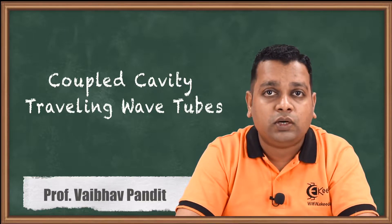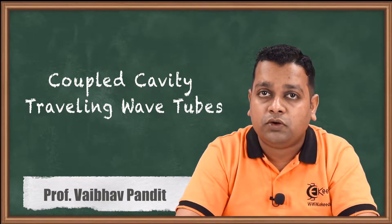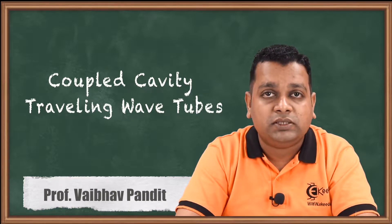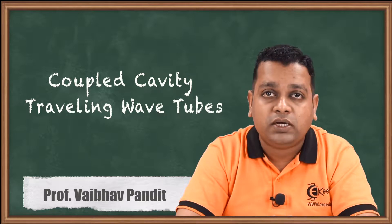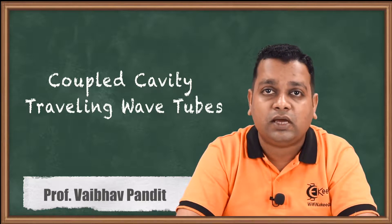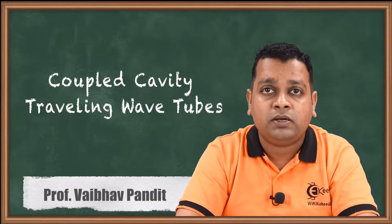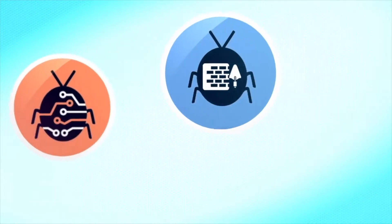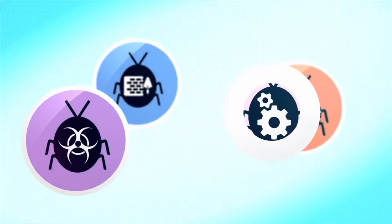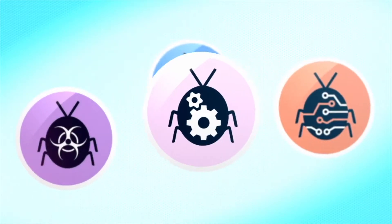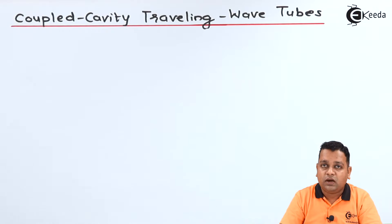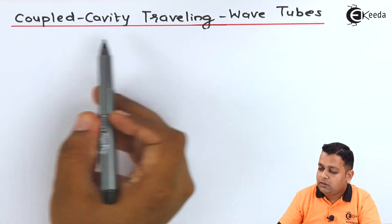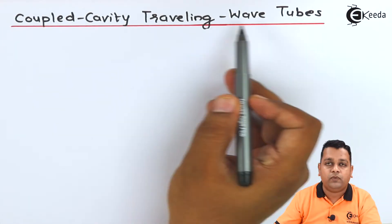Recently we covered the helix-type traveling wave tube, which is basically meant for broadband applications. Now let us see how it is different from the device that uses coupled cavities. So let us see the coupled cavity traveling wave tubes.